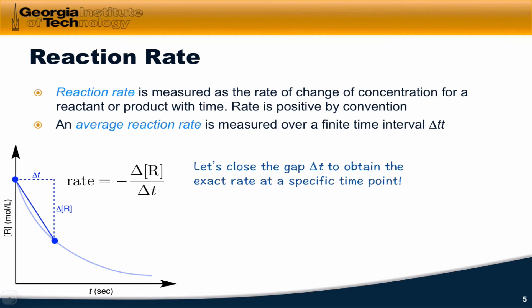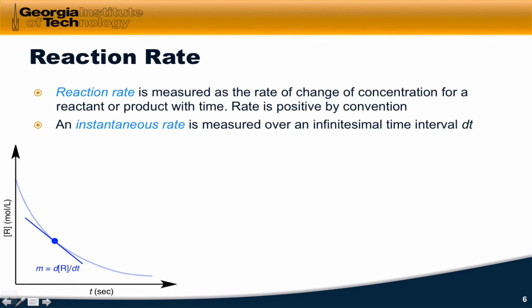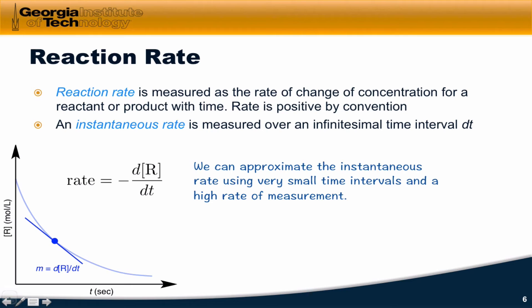To achieve a more accurate rate and one that provides more insight, let's close the gap delta T to make it as small as we possibly can. If we do that, we move this T0 point as close as we can to the T1 point, we end up with an instantaneous reaction rate, where there's an infinitesimal difference between the two time points. The instantaneous rate is just like the average rate, except we're using a derivative instead of deltas. We still use the negative sign since dr/dt is less than zero. Notice that the slope of this line is less than zero. It's sloping downward. But we want the rate to be positive by convention, which is why we use this negative sign. In practice, we can approximate the instantaneous rate using very small time intervals and a high rate of sampling of the concentration.